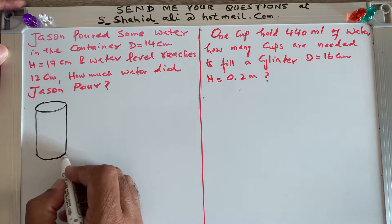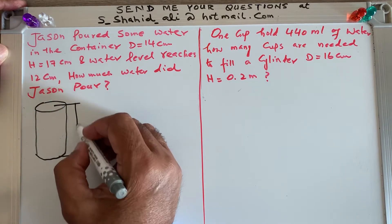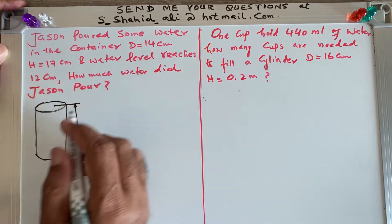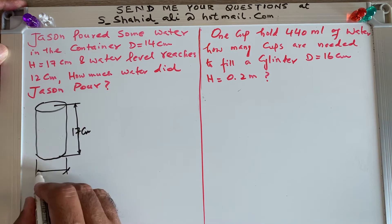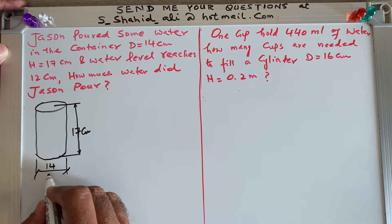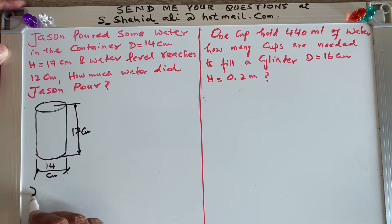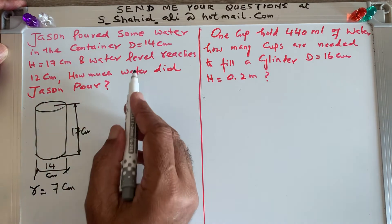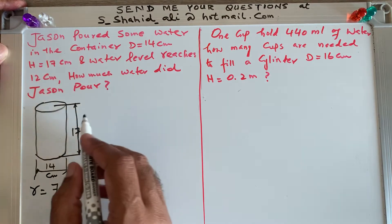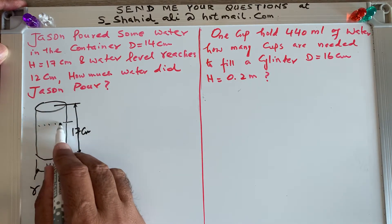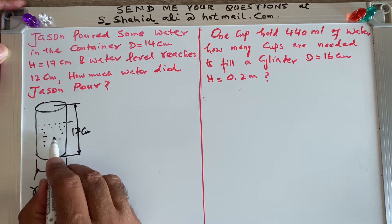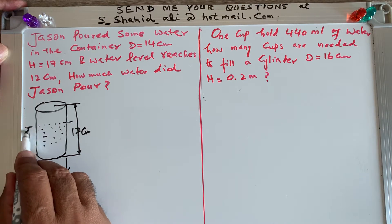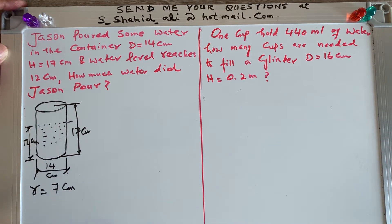There is a cylinder whose height is 17 centimeters and diameter is 14 centimeters. Since diameter is given, the radius is half, which is 7 centimeters. When Jason poured the water it reaches the level of 12 centimeters, so we don't use 17 centimeters but instead use the level of 12 centimeters.